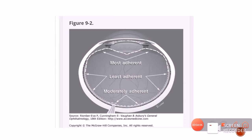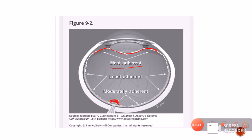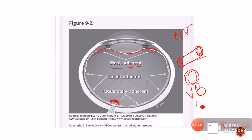To understand posterior vitreous detachment, we should know where the vitreous is very tightly or strongly adhered. The vitreous is strongly attached at the vitreous base. Other places where it is attached include the optic disc — where it is moderately attached — wherever there is neovascularization, wherever blood vessels are present, and at the optic nerve. However, it is most strongly attached at the vitreous base.